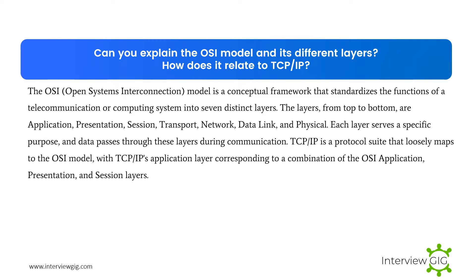Can you explain the OSI model and its different layers? How does it relate to TCP/IP? The OSI, Open Systems Interconnection, model is a conceptual framework that standardizes the functions of a telecommunication or computing system into seven distinct layers. The layers, from top to bottom, are application, presentation, session, transport, network, data link, and physical. Each layer serves a specific purpose, and data passes through these layers during communication. TCP/IP is a protocol suite that loosely maps to the OSI model, with TCP/IP's application layer corresponding to a combination of the OSI application, presentation, and session layers.